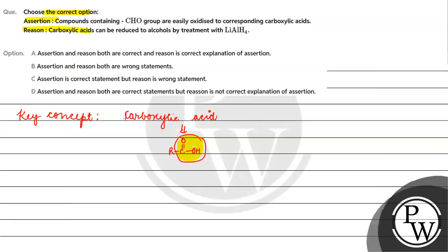What do we have in assertion? In assertion, if we have RCHO, it easily oxidizes to give carboxylic acid. This statement is correct because the aldehydes are very reactive.